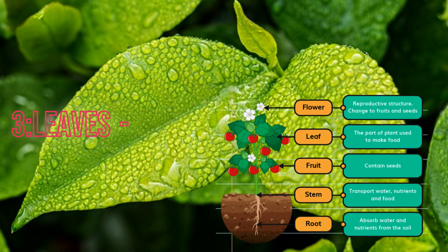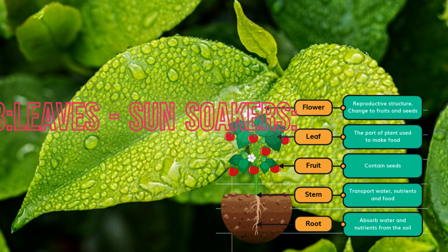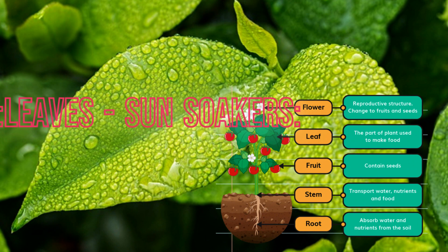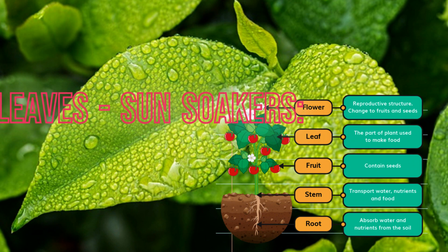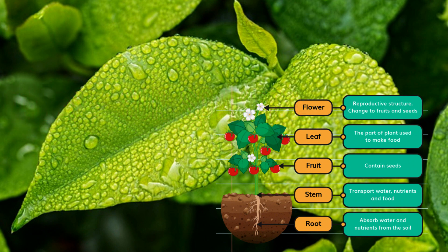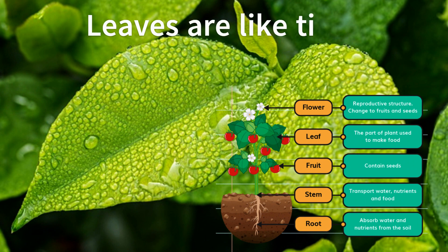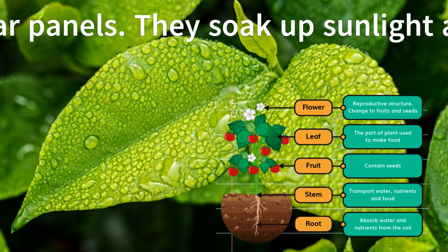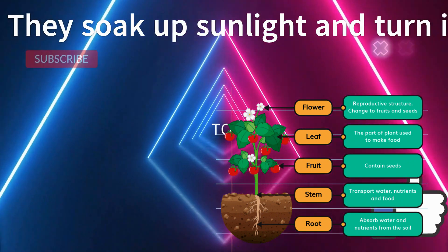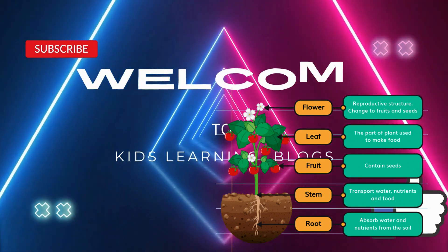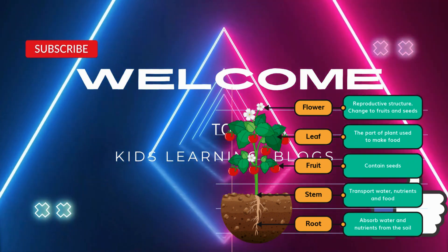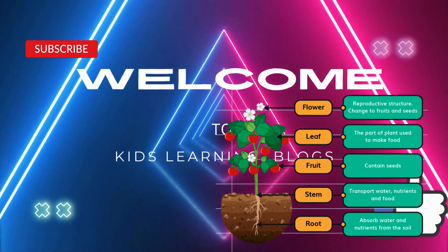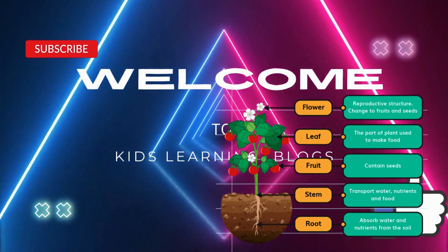Leaves: sun soakers. Look at these green wonders — these are leaves. Leaves are like tiny solar panels. They soak up sunlight and turn it into food for the plant. Just like you need food, plants need their leafy meals too.